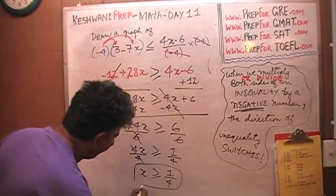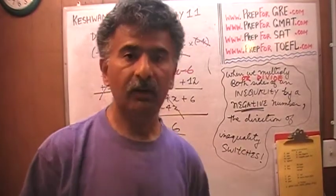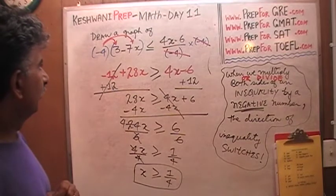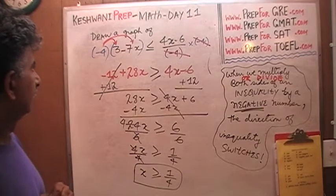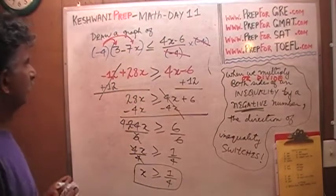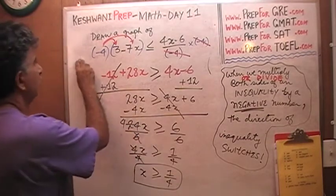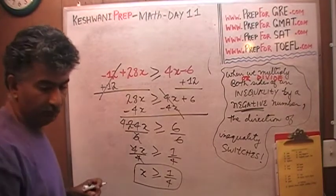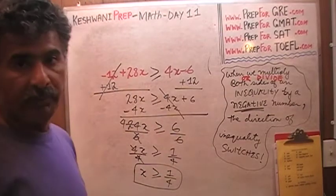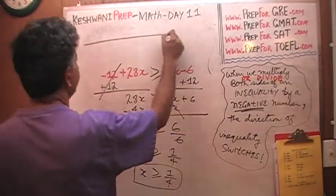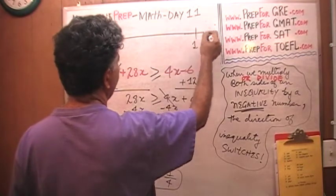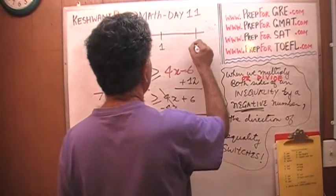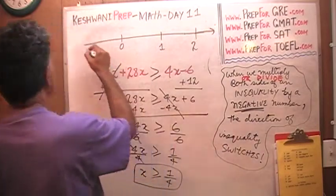That's your final answer: x is greater than or equal to one quarter. Now we need to show it on the graph, so I'm going to erase the top part to make room. Here is our number line — here is my zero, there is my one, and it goes on with an arrow. It also goes on forever in the other direction.